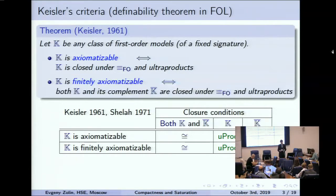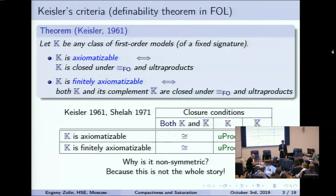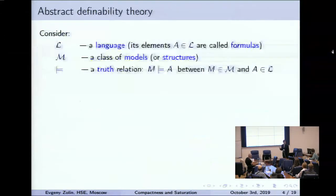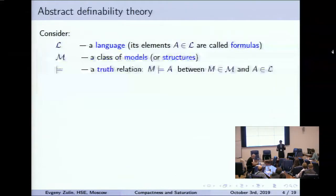Our aim is to analyze what is the role of the operations of ultrapower and ultraproduct that make it possible to obtain results like this. But before that, let us notice some non-symmetry in this table: we have two ultraproducts in the last line, and ultraproduct and ultrapower in the first line. The question is that this is not the whole story — there are two more things that make the table complete and symmetric.